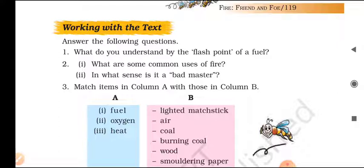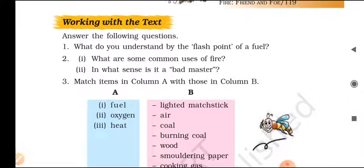Question two: i) What are some common uses of fire? ii) In what sense is it a bad master? Answer i): Fire is used for cooking food, keeping our rooms warm in winter, and to generate electricity — and there are many more uses. Answer ii): If fire gets out of control it can be very dangerous; it may burn houses, factories, and vast forest areas. In that sense it is a very dangerous thing.